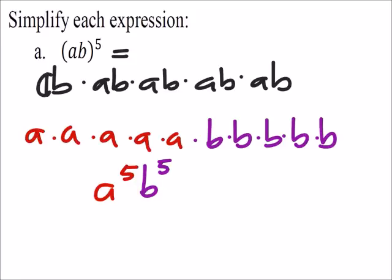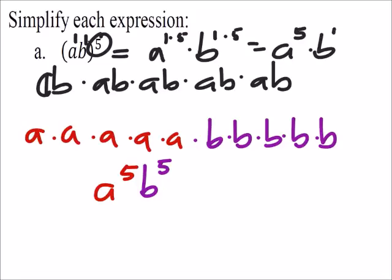So the rule on this one is just you'd have a to the power of five. That's our exponent. Well, let me show this differently because that's a to the power of one and b to the power of one. So it'd be one times five times b to the power of one times five, which is a to the power of five times b to the power of five.